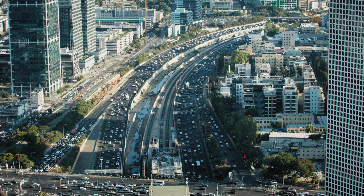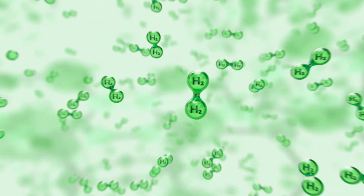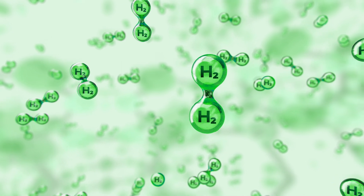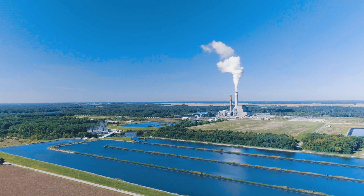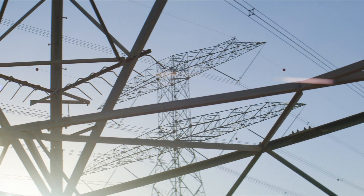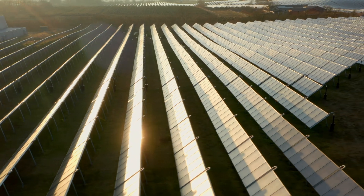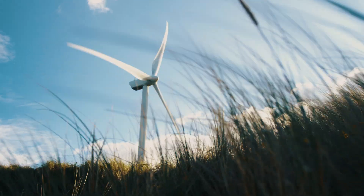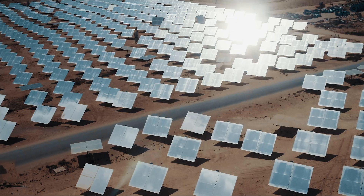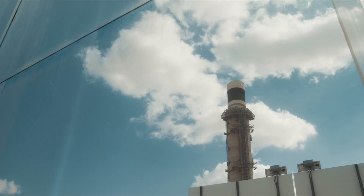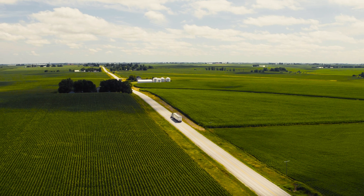For example, many people don't know that the carbon intensity of green hydrogen can change depending on the type of electricity used to produce that hydrogen. Both solar and wind are good, but they are not the same. Using one or the other can have dramatic impacts on the lifecycle carbon intensity of the green hydrogen produced.